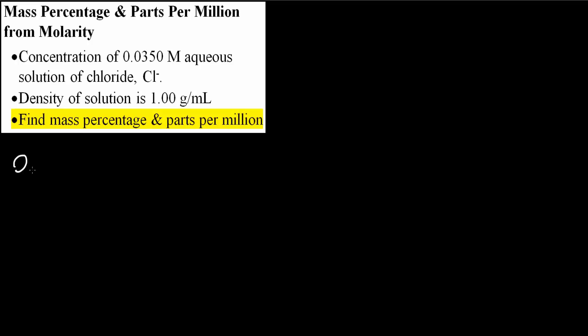We have 0.035 moles of Cl minus per liter of solution. We know this because molarity is moles per liter. From here, the molecular weight for chloride is 1 mole of Cl minus equals 35.45 grams of Cl minus. This is simply from the periodic table.